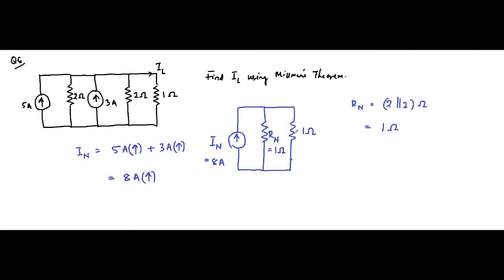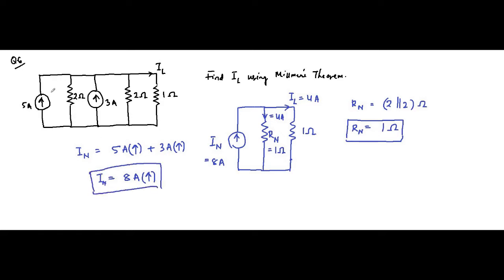Applying the current division rule — since both resistors are equal to 1 ohm connected in parallel, the current will be divided equally. So load current IL will be 4 ampere, and the current flowing through the other resistor will also be 4 ampere. So the load current is equal to 4 ampere. This is the Norton equivalent circuit based on Millman's theorem. We converted the circuit into the Norton equivalent using Millman's theorem and then found the load current using current division rule.